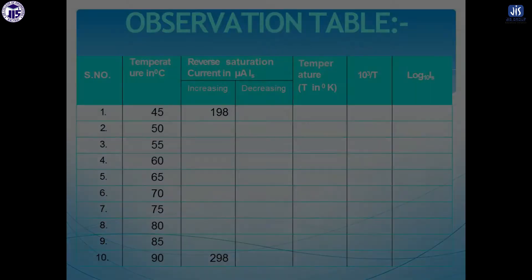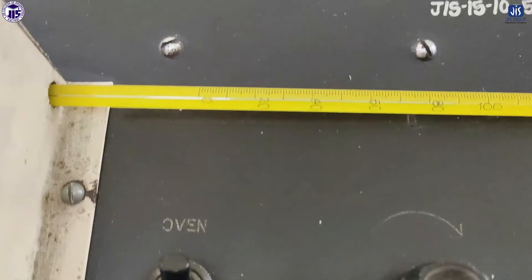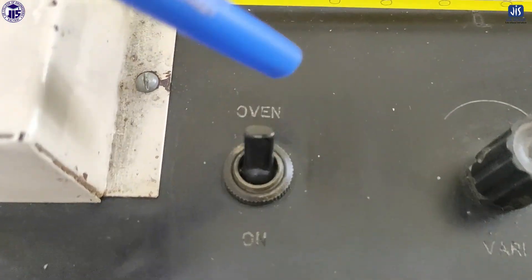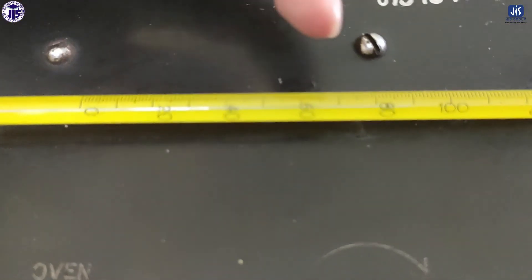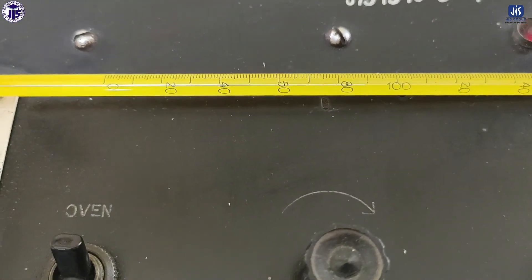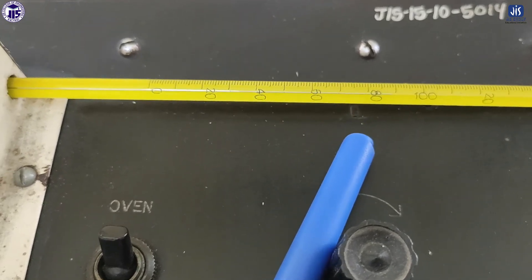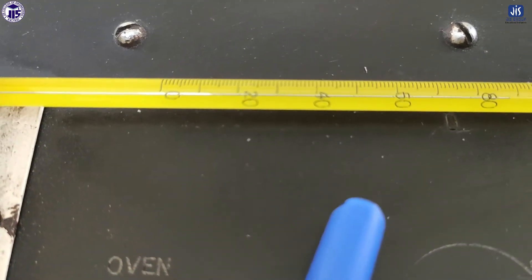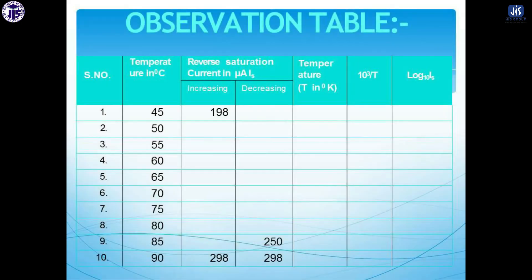Now we have to take the decreasing current. For the decreasing current, you have to switch off the oven. On this side the oven is on, and on this side the oven will be off. So I am switching off the oven. Now you will see the temperature will start decreasing — it will be a very slow process. For the decreasing part you start from 90 degrees. When you switch off the oven, the temperature is still at 90 degrees, so the decreasing current at 90°C is also 298.